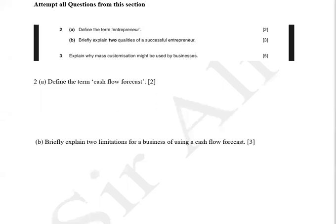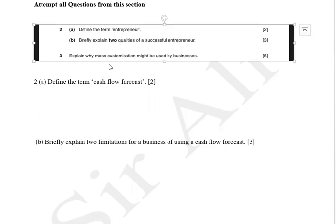For the May 2022 A-Level Business paper, these are the questions for question number one. It can be about entrepreneur qualities of a successful entrepreneur. I'm thinking part one might be related to one question which is on stakeholders.